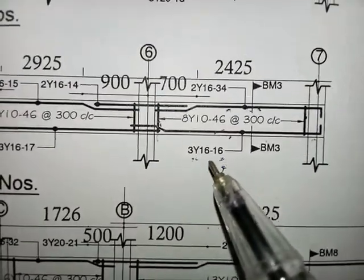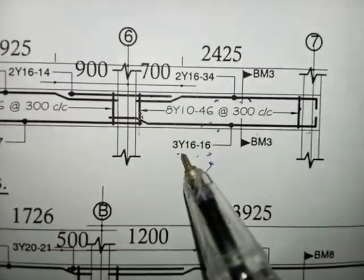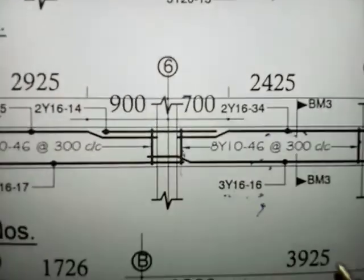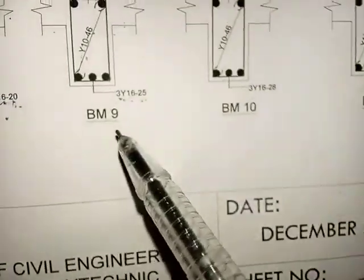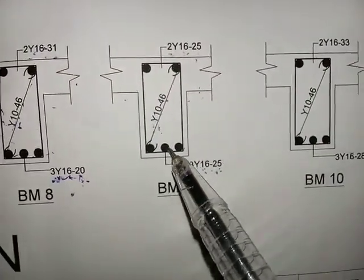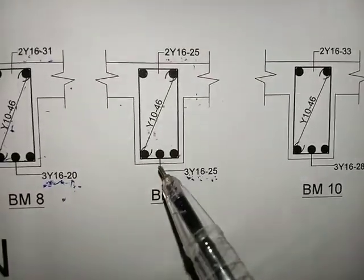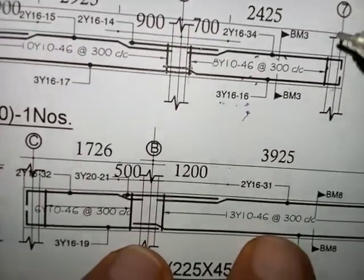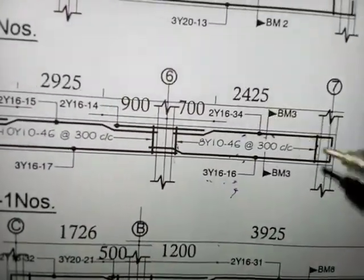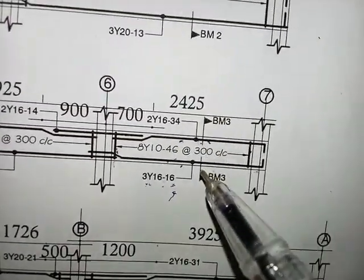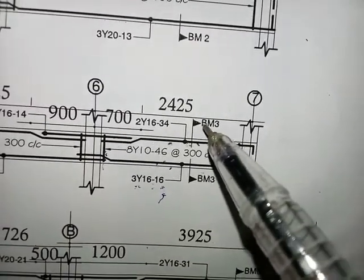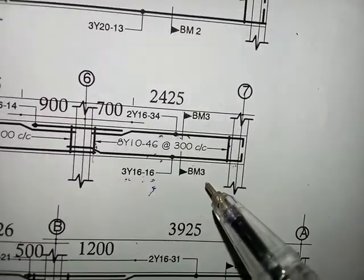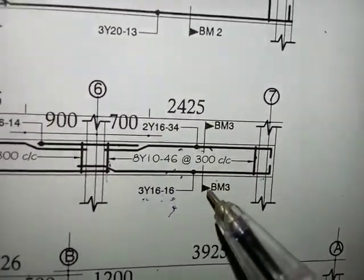In the beam sections you can see three of these — three Y16, three Y16. Remember you have 3Y16, and on top here you have 2Y16-34. Now we have BM3, BM3, BM3 — which is the beam label. This shows the section line where the section of the beam is being cut through.